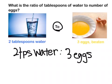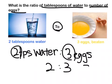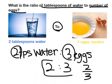So, what is the tablespoon of water to number of eggs? So, number of eggs is 3, and then tablespoons of water is 2 tablespoons, right? So, you can put it as 2 to 3, or you can write it as this, or you can write it as whatever way there is. But yeah, this is the main thing.